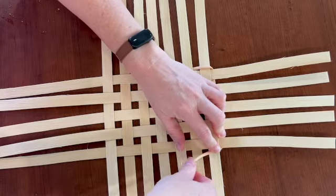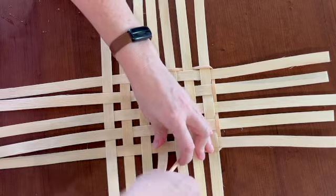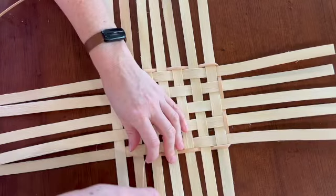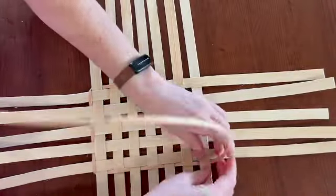You start with the rounded side of the flat oval up, but after that first corner it's going to be down. The next corner it'll go back up, then back down again.